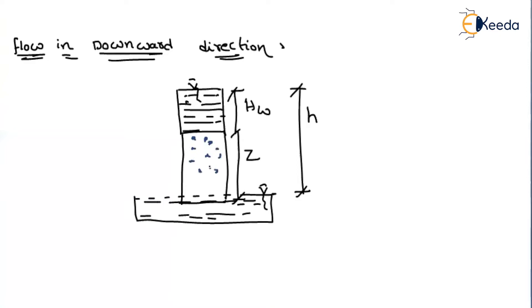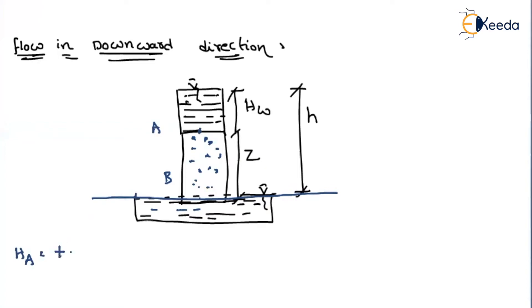Now let us find the head available at point A and point B. The tail water level is our reference datum. The head at point A equals the datum head plus pressure head. Point A is above the reference axis by distance Z, so the elevation head is +Z. The pressure head at A is +HW, since the piezometer at A rises to the height of the water table above A. So the total head at A is Z plus HW.